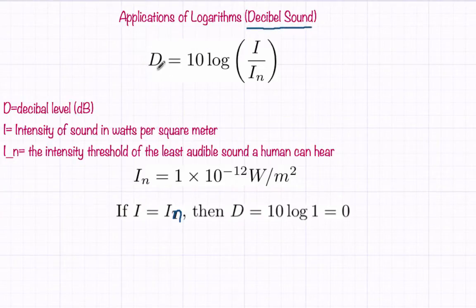The decibel is defined as d equals 10 times the logarithm of i divided by i sub n. d is referred to as the decibel level, dB for abbreviation.